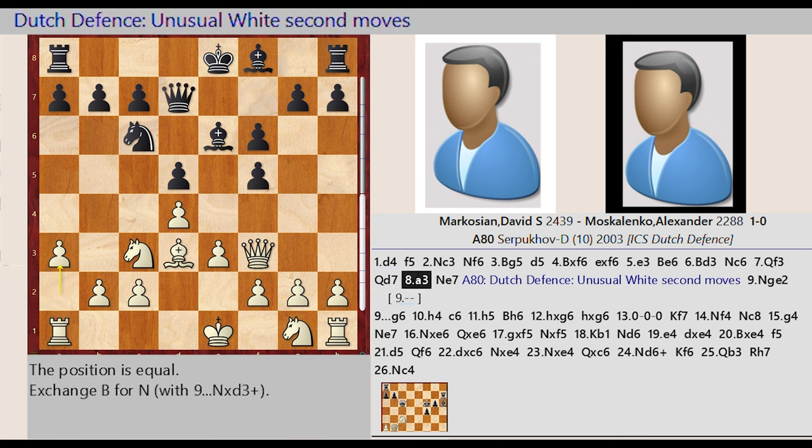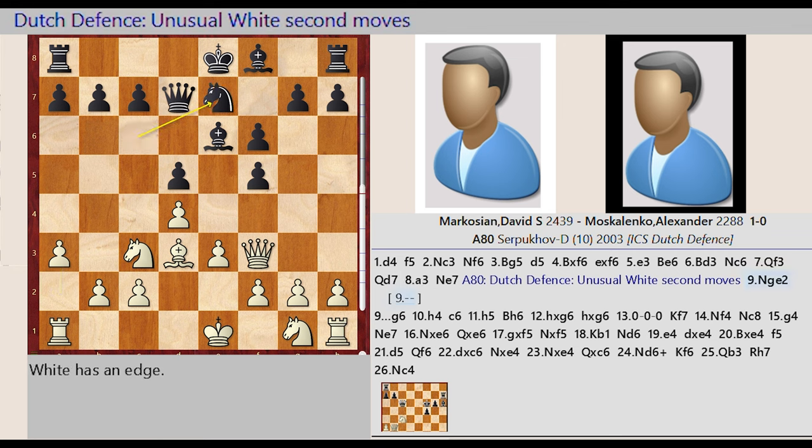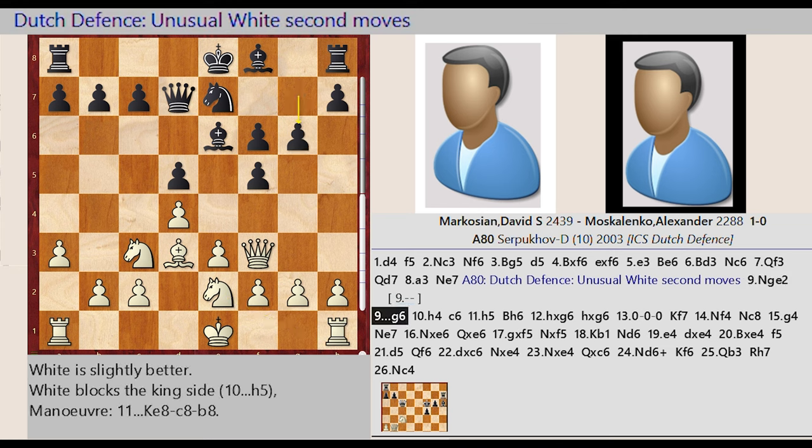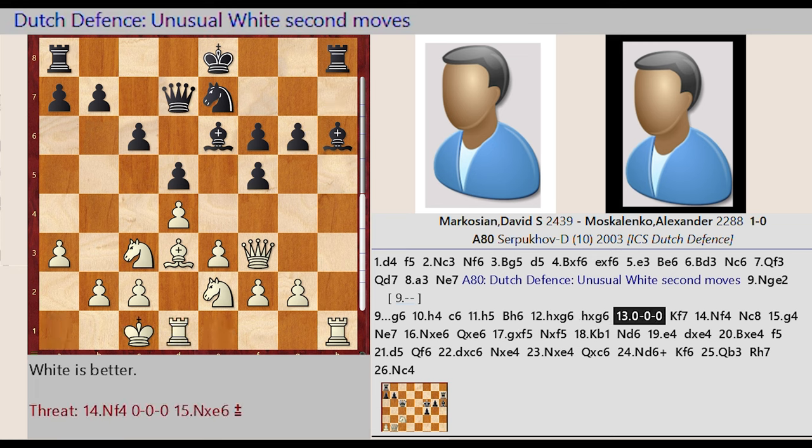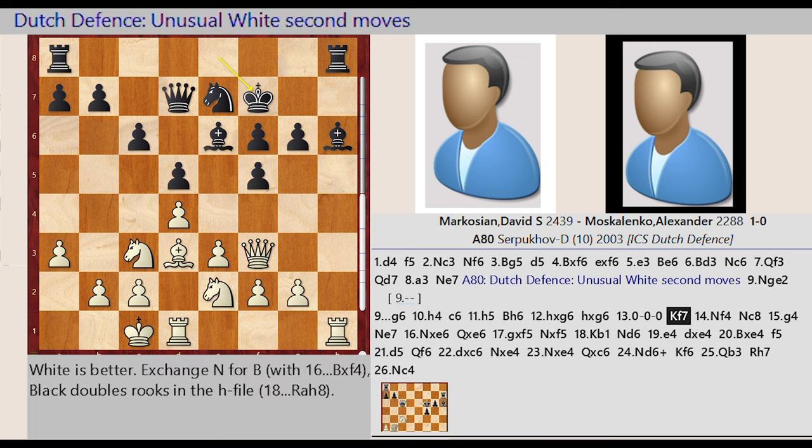a2 a3, knight c6 e7, A80 Dutch Defense Unusual White Second Moves, knight g1 e2, g7 g6, h2 h4, c7 c6, h4 h5, bishop f8 h6, h5 captures g6, h7 captures g6, castling queenside, king e8 f7, knight e2 f4.